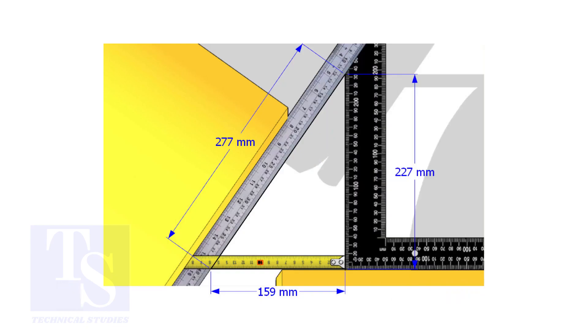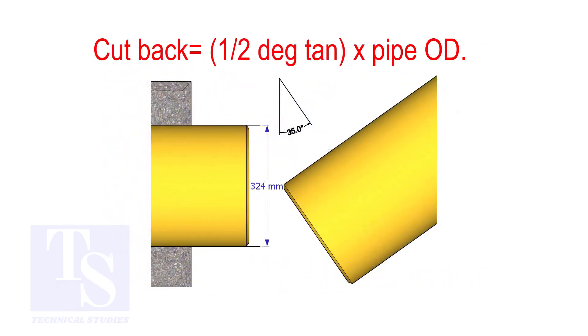How to calculate the cutback of a single cut miter? When it is a single cut, the cutback is half degree tan multiplied by the OD of the pipe.